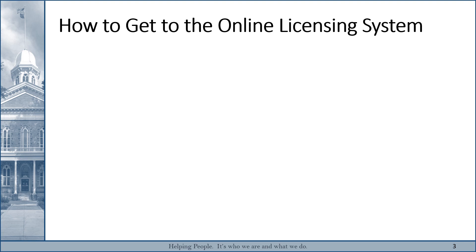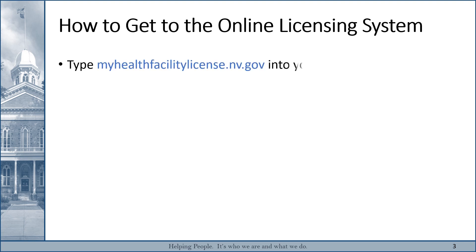The easiest way to access the Nevada Online Licensing System for Health Facilities is to type myhealthfacilitylicense.nv.gov into your web browser address bar. Be sure to enter this into the address bar, not into a search engine such as Google, to be directed to the system.